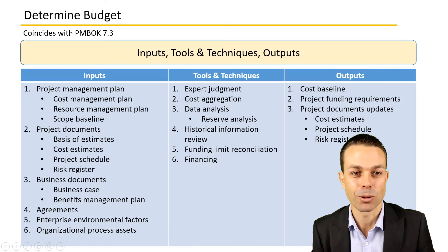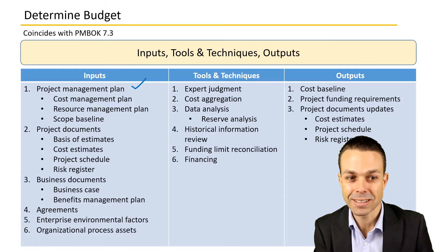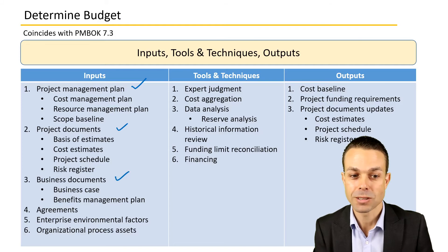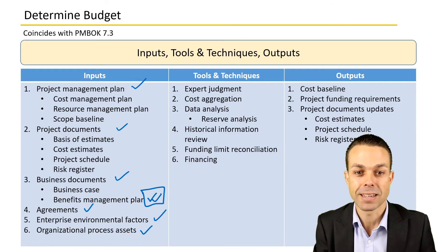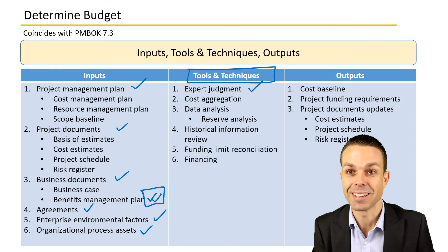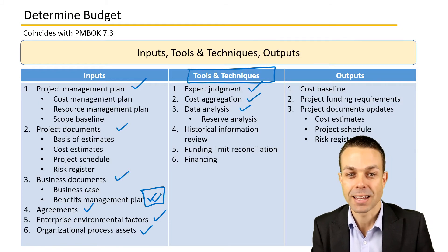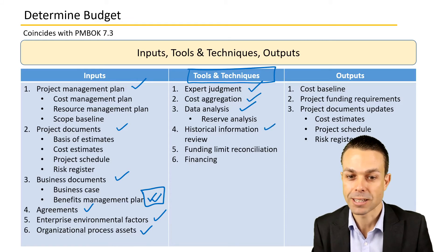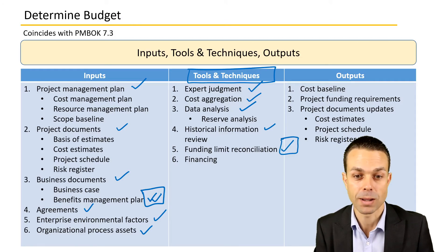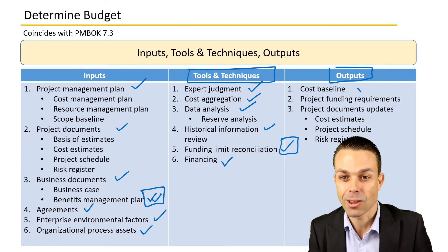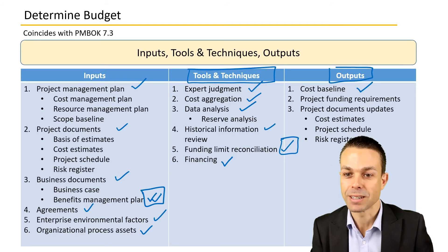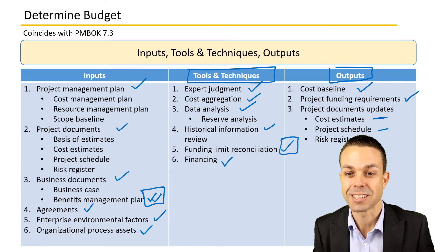Inputs, tools and techniques, and outputs for determining the budget: we've got the project management plan and its different parts, project documents, business documents such as the business case and benefits management plan, agreements that have been made, enterprise environmental factors, and organizational process assets and templates. Tools and techniques include expert judgment, cost aggregation, data analysis, historical information review, funding limit reconciliation, and financing. Outputs include the cost baseline, project funding requirements, and project document updates like cost estimates, the project schedule, and the risk register.